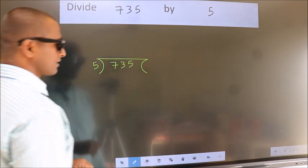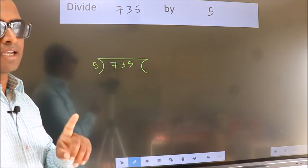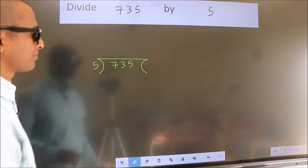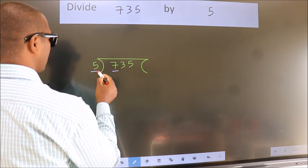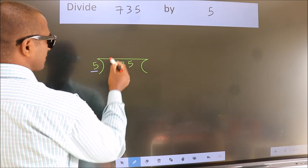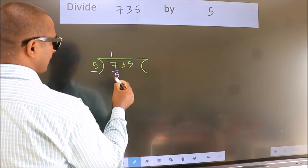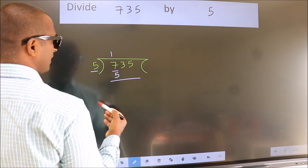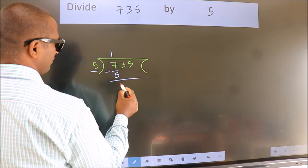This is your step 1. Next, here we have 7, here 5. A number close to 7 in the 5 table is 5 once is 5. Now we should subtract. We get 2.